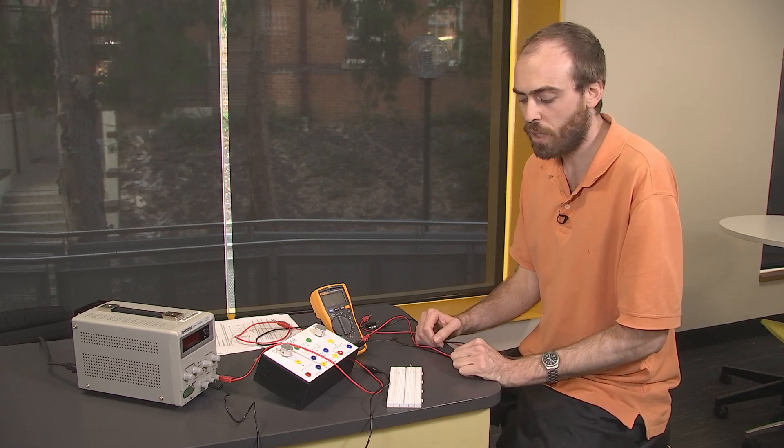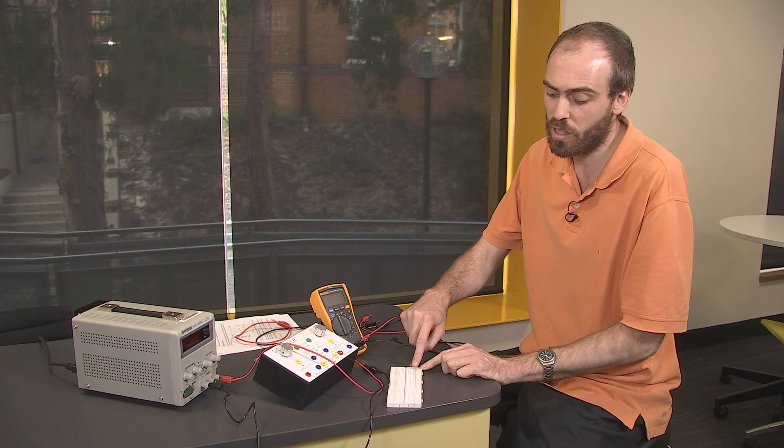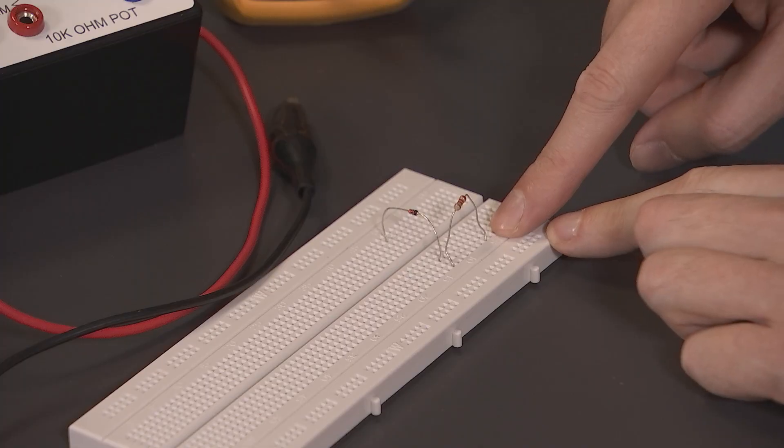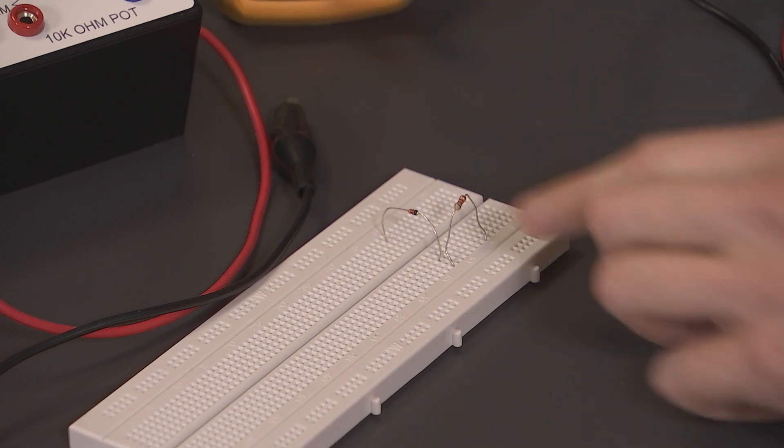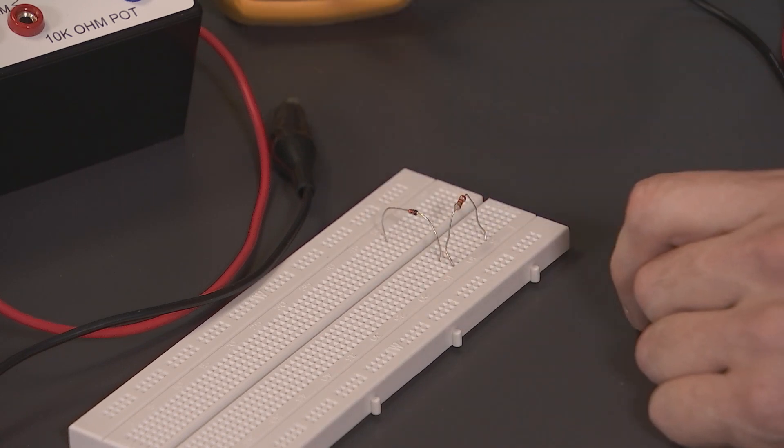So I've got my breadboard here. I've already put in place my resistor. So this is a 2.2 kilo-ohm resistor, and also my Zener diode. So the cathode is at this end, the anode is at this end.